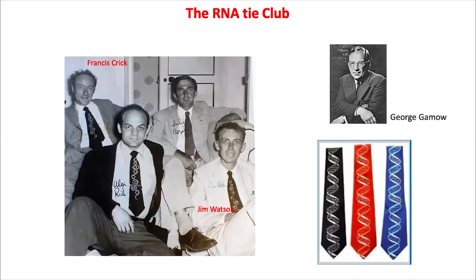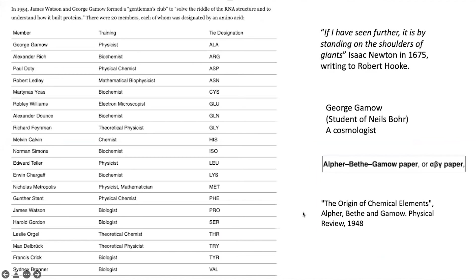They knew that amino acids were strung together to make polypeptides — this was well established by the 1950s — but the mechanistic link between DNA and RNA was not very clear. Gamow and Watson brought together like-minded people like Alex Rich and Leslie Orgel. Members of the club did not all stay in a single location; they were from different places, would write letters to each other, meet at conferences, and discuss the latest in molecular biology. Gamow made ties for everybody, and each of the 20 members got a tie designation corresponding to one of the 20 amino acids.